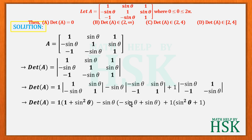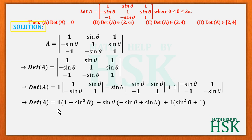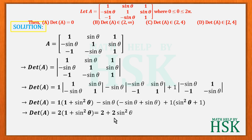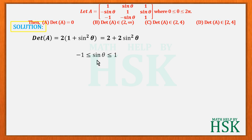After simplification, the middle term evaluates to 0. The remaining terms combine to give sin²θ + 1. Therefore, the determinant of A equals 2(1 + sin²θ), which can also be written as 2 + 2sin²θ.